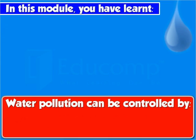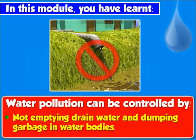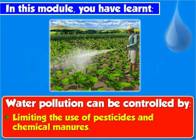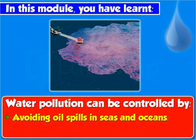Water pollution can also be caused by seeping of pesticides and chemicals through the soil into underground water and spilling of oil in seas and oceans. Water pollution can be controlled by not emptying drained water and dumping garbage in water bodies, treating chemicals from factories before allowing them to flow into water bodies, limiting the use of pesticides and chemical manures, and avoiding oil spills in seas and oceans.